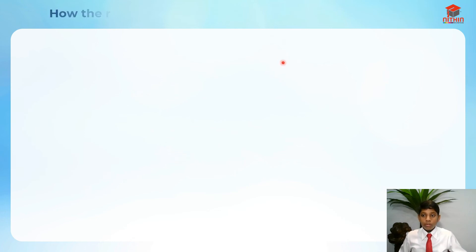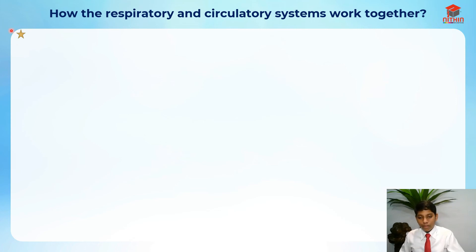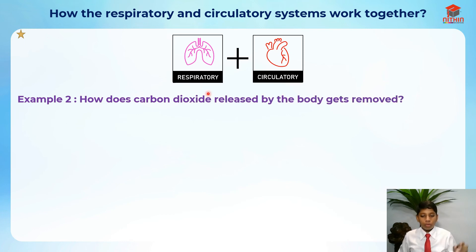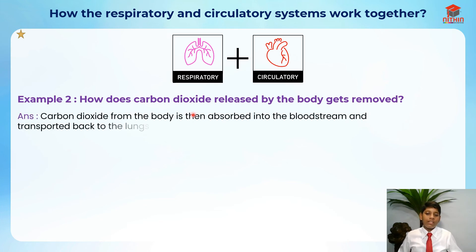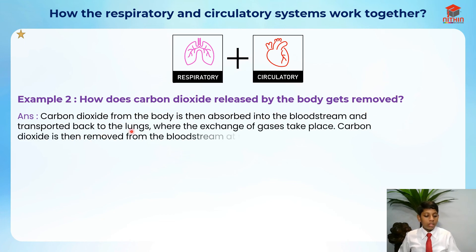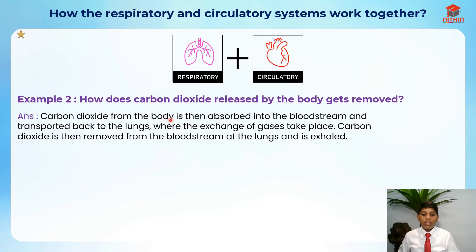Example two: how does carbon dioxide released by the body get removed? The answer is that carbon dioxide from the body is absorbed into the bloodstream and transported back to the lungs where exchange of gases takes place. Carbon dioxide is then removed from the bloodstream at the lungs and is exhaled. Please remember this answer.